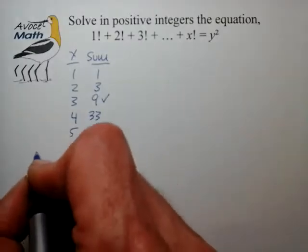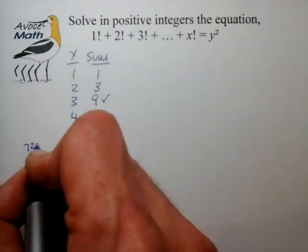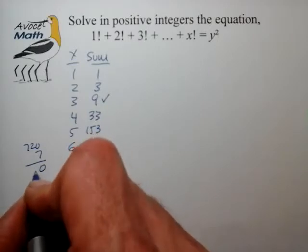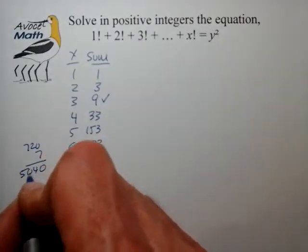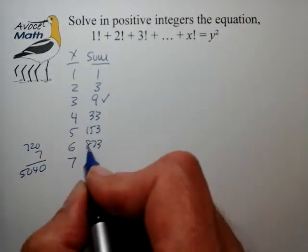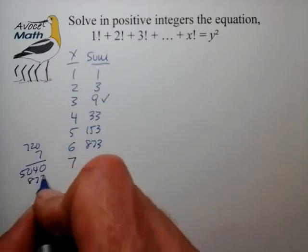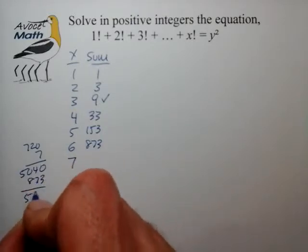7, let's see 7 times 720, so 7 factorial would be 5040. Add that to 873 and that's 5913.